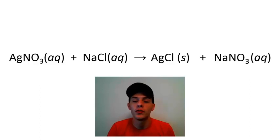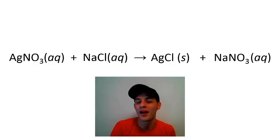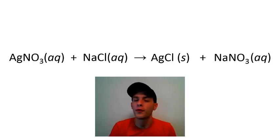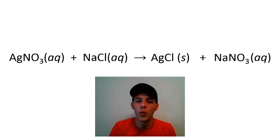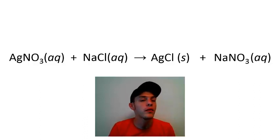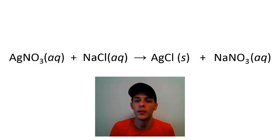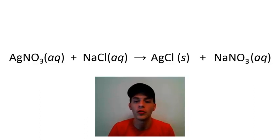We've now predicted the products and assigned the correct states of matter based on their solubility in water. Now we have to balance this chemical equation. For this particular equation, balancing is very easy because coefficients of one for all reactants and products have it balanced. They're not always going to be this easy, but once you've predicted the products you have to balance the equation before moving any further.